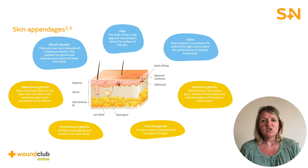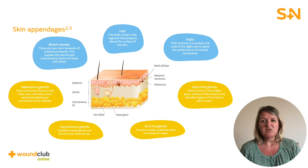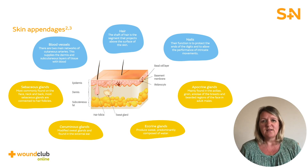Another appendage in the skin is hair. The shaft of a hair is the segment that projects above the surface of the skin, and every hair is made up of columns of dead keratinised epidermal cells connected together with extracellular proteins. Nails are present in the skin to protect the ends of the digits and to allow the performance of intricate movements. The finger and toenails are made of sheets of keratin and are very tough.